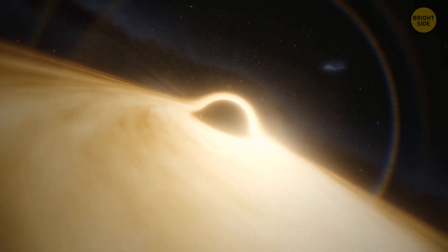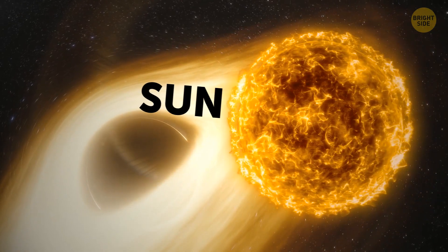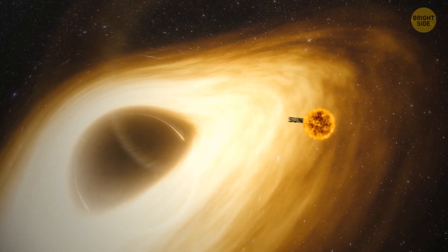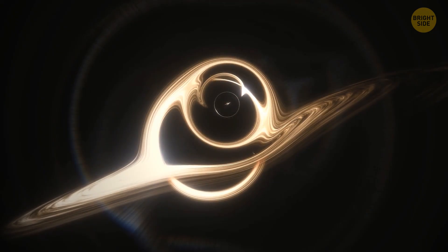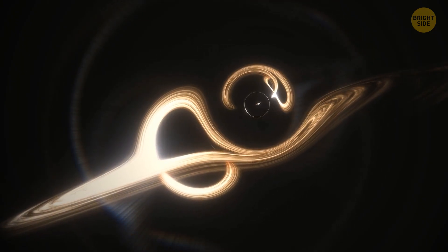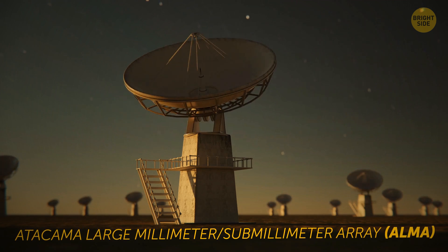Supermassive black holes are the largest among all black holes out there. Their mass can be hundreds of thousands or even millions to billions of times larger than that of our sun's. And two such giants have been recently spotted with the help of an array of telescopes in northern Chile's Atacama Desert.